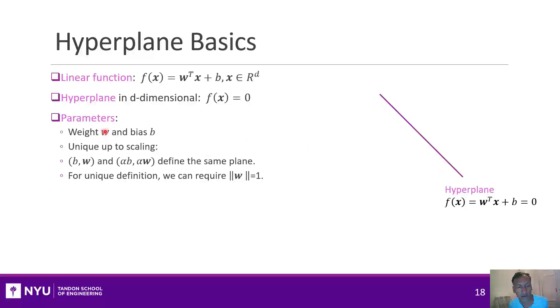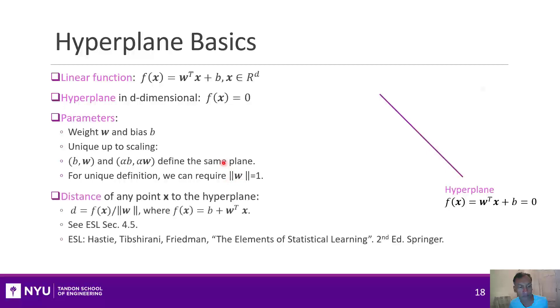Now, the parameters of this are the weight and bias. And, of course, the line or that hyperplane is unique up to scaling. So, if you have any b and w and you multiply it by any non-zero alpha, you'll get the same boundary point. So, if we wanted it to be unique, we could just always specify, for example, that the weight is unit norm.